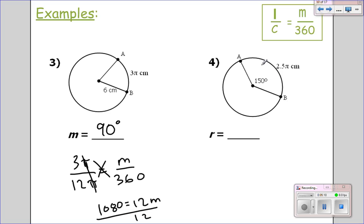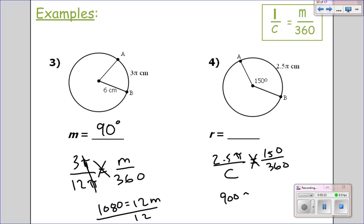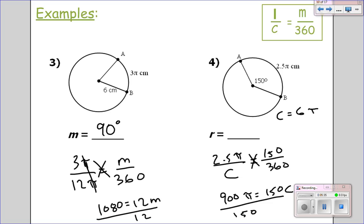The arc length is 2.5 pi over the circumference, which I don't know, equals the angle over 360. Cross multiply: 900 pi equals 150 times the circumference. Divide by 150 — the circumference is 6 pi centimeters. So the radius will be half of 6, which is 3 centimeters.